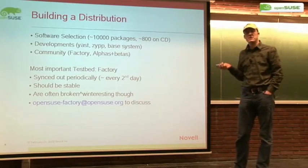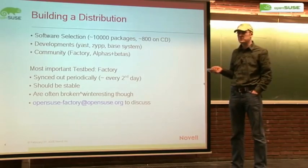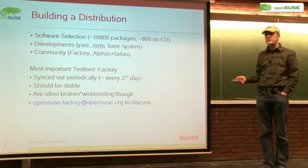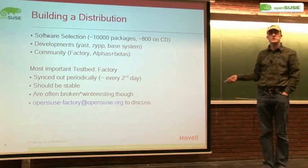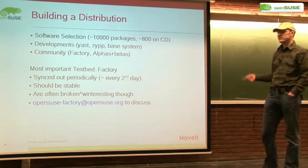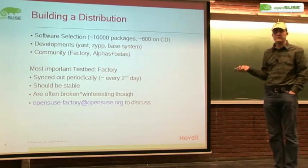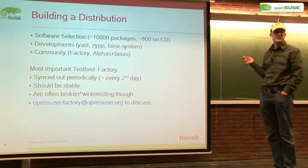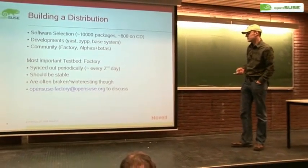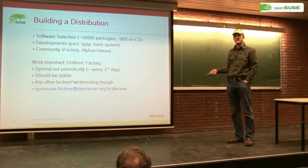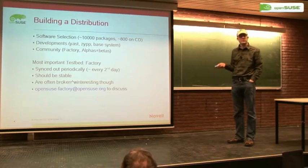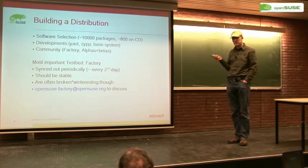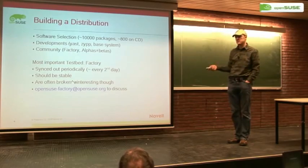The most important of these is the factory tree, which is our leading edge development. We are syncing it out roughly every two days — after every rebuild we push out the tree. The goal is that it's stable and actually usable from a factory installation. But of course, with almost every open source project, when you get the bleeding edge, it's always interesting at times. There's a mailing list specific to those using it, which is also the main development discussion platform. If you want to contribute to OpenSUSE and to the next version, openSUSE Factory is your goal.